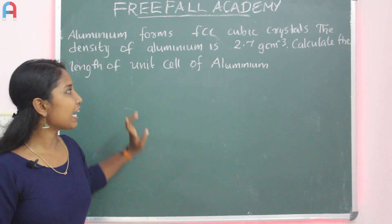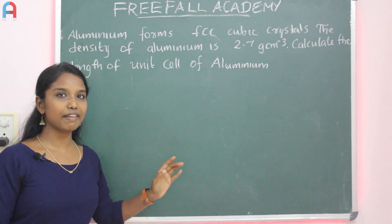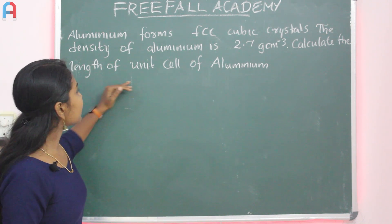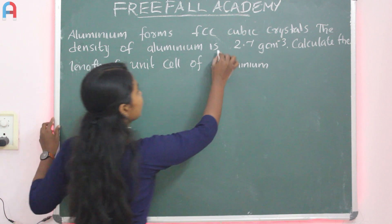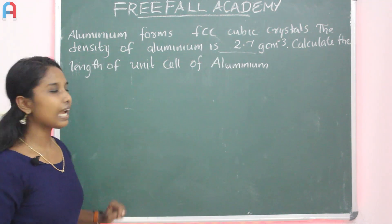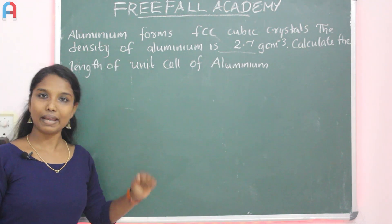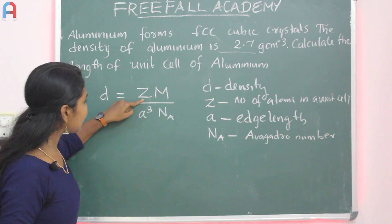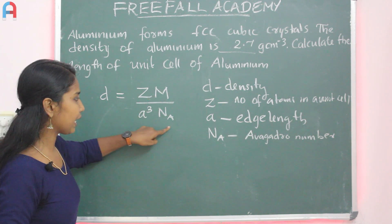Aluminium forms an FCC crystal. The density formula we use is: D equals Z times M divided by A cube, where D is density, Z is the number of atoms per unit cell, M is the molar mass, and A is the edge length.